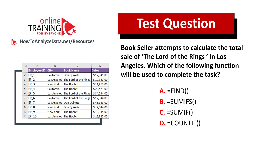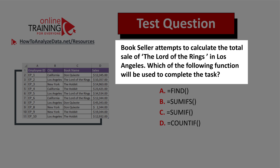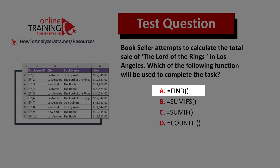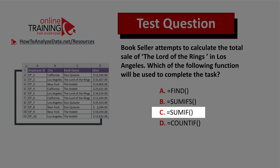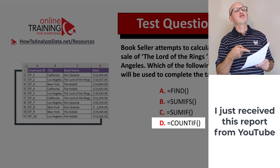Now here's a question for you to try. I have full confidence that you can solve this challenge from the real test. A bookseller attempts to calculate the total sales of the Lord of the Rings title in Los Angeles. Which of the following functions should be used to complete the task? Choice A: FIND function; Choice B: SUMIFS function; Choice C: SUMIF function; or Choice D: COUNTIF function.